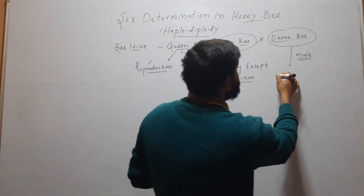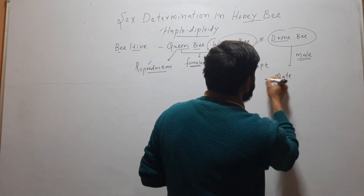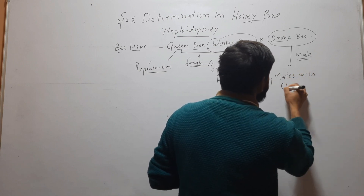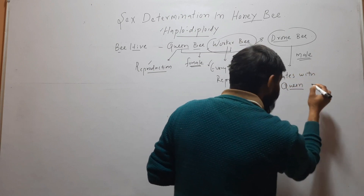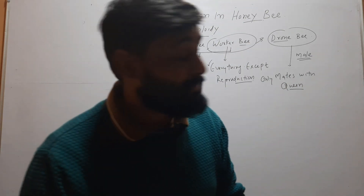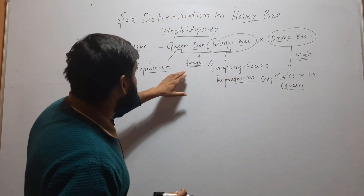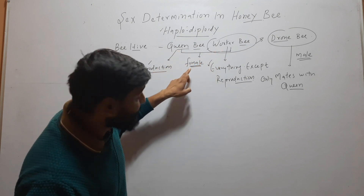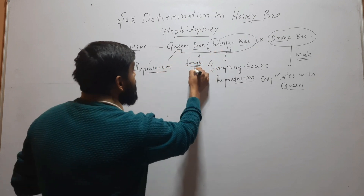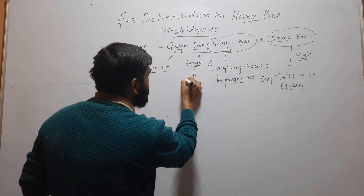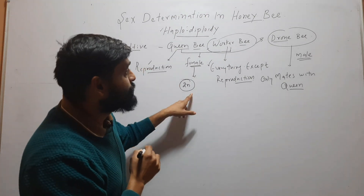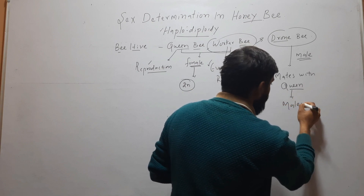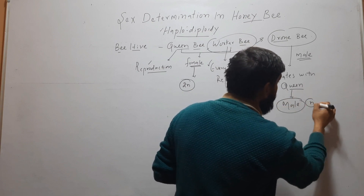The drone only mates with the queen. An interesting thing is that both the queen bee and worker bee are female and they are diploid — 2N. But the drone bee is male, and this male is haploid.